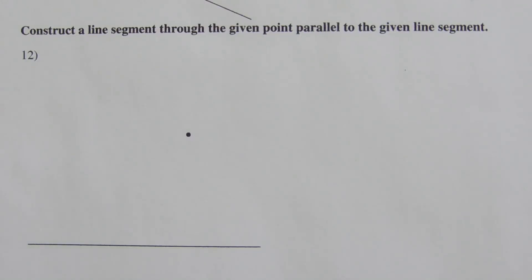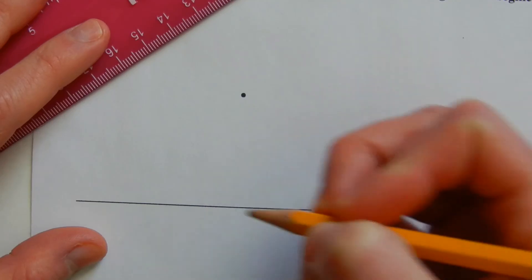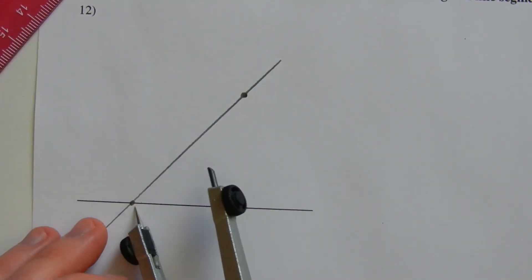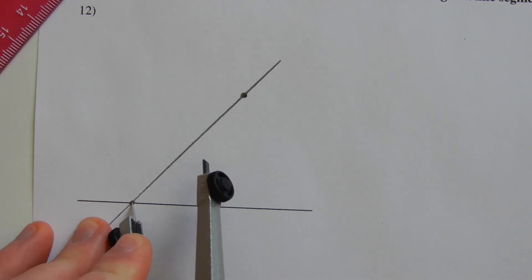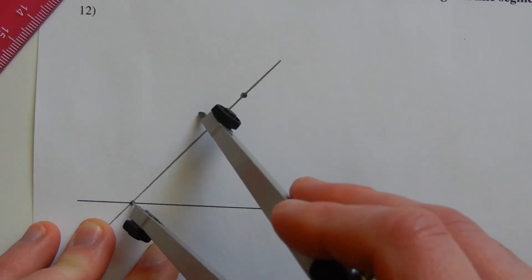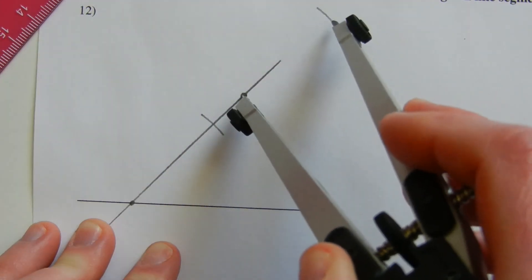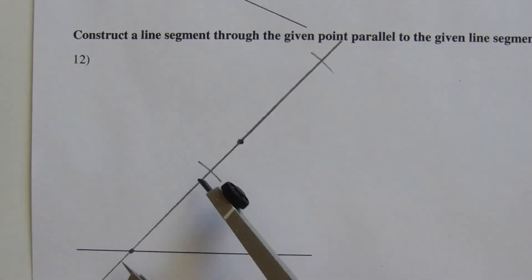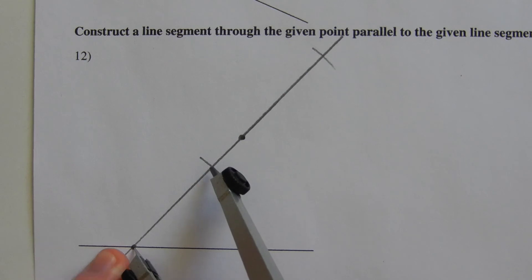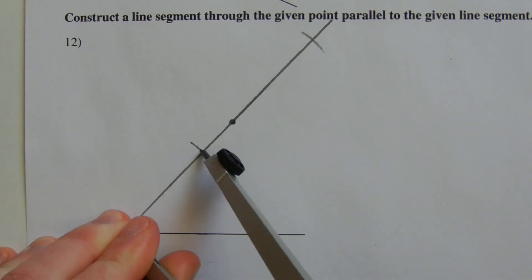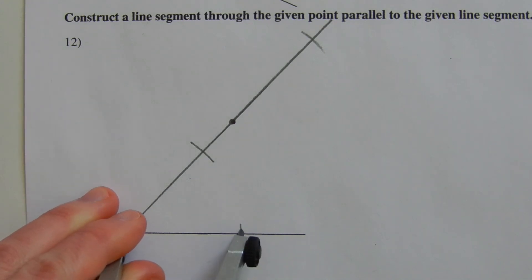Number twelve: construct a line segment through the given point parallel to the given line segment. We pick a point on the given line segment and connect it to the given point, creating a new line segment — essentially a transversal. From where that new line segment meets the original segment, we extend our compass slightly smaller than the distance to the next point, make a mark there, and then mark where that line also intersects.